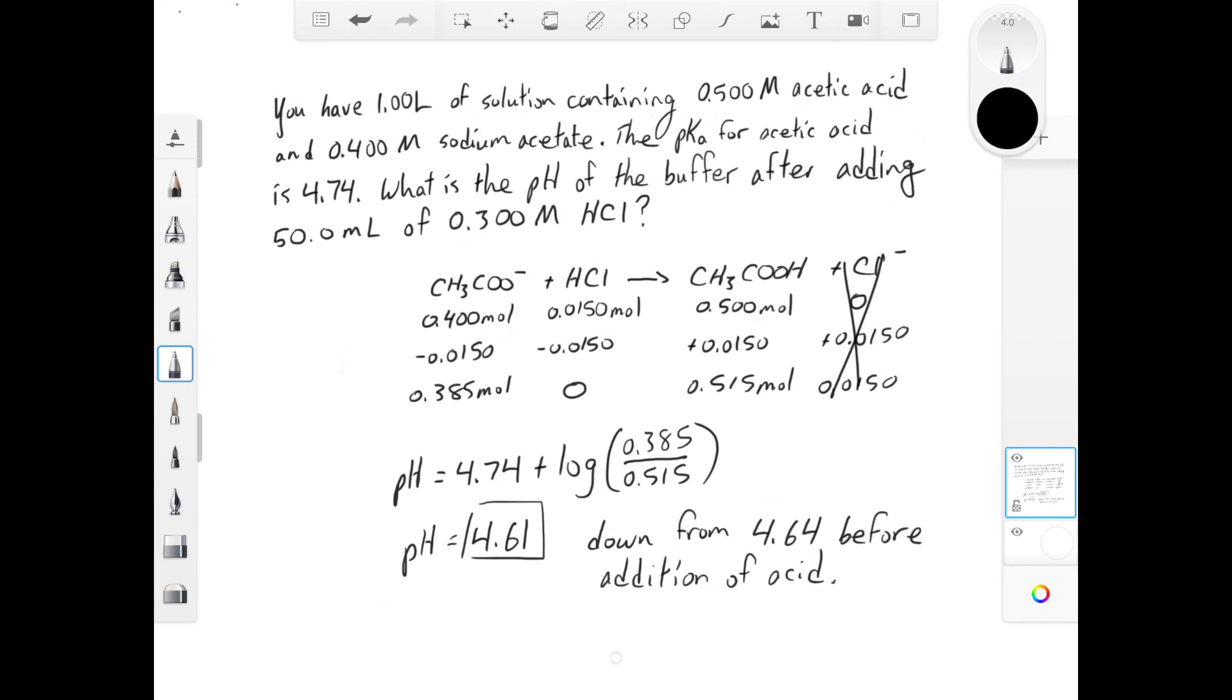So we can see that even though we added a fairly large amount of a moderately concentrated acid, the effect on the pH was dramatically minimized because of the buffer system. And the same type of method would be used if we had added strong base like NaOH instead of an acid.